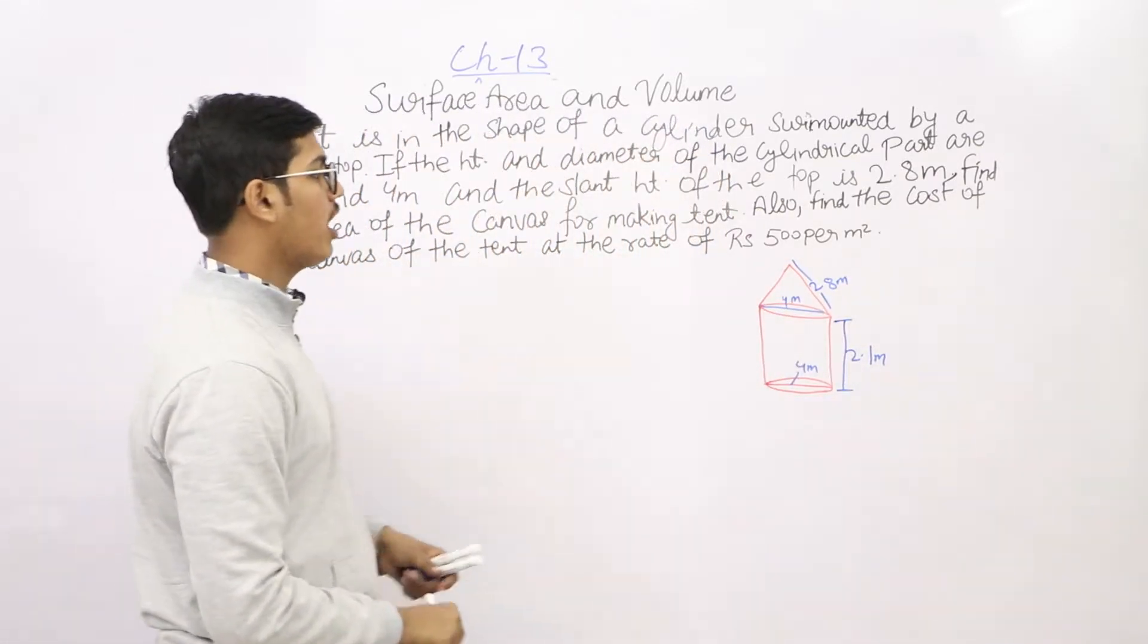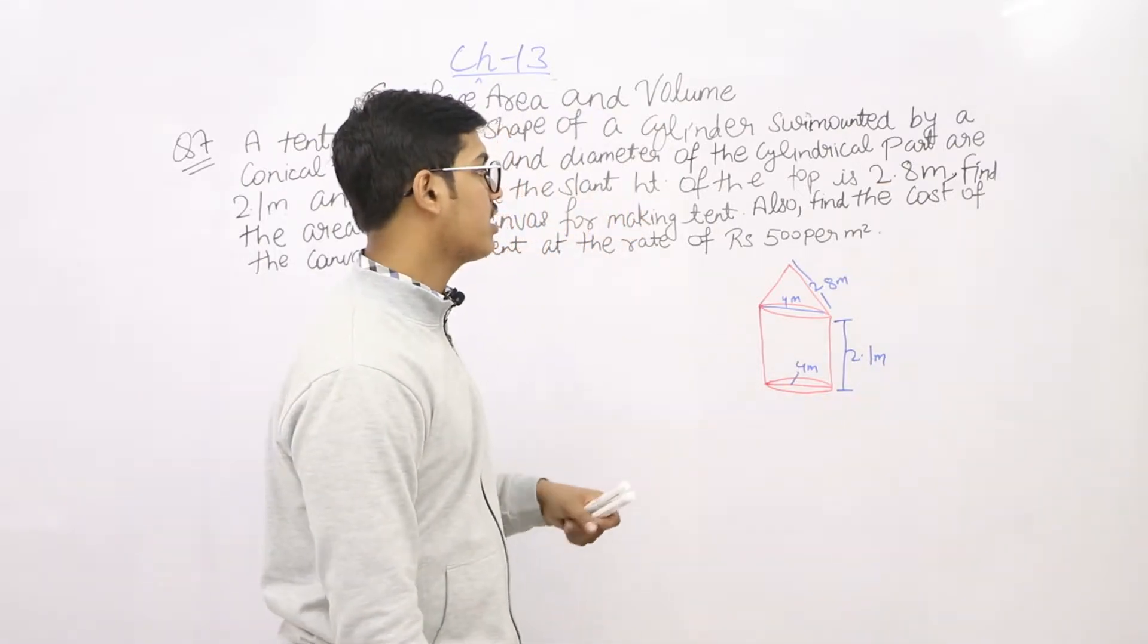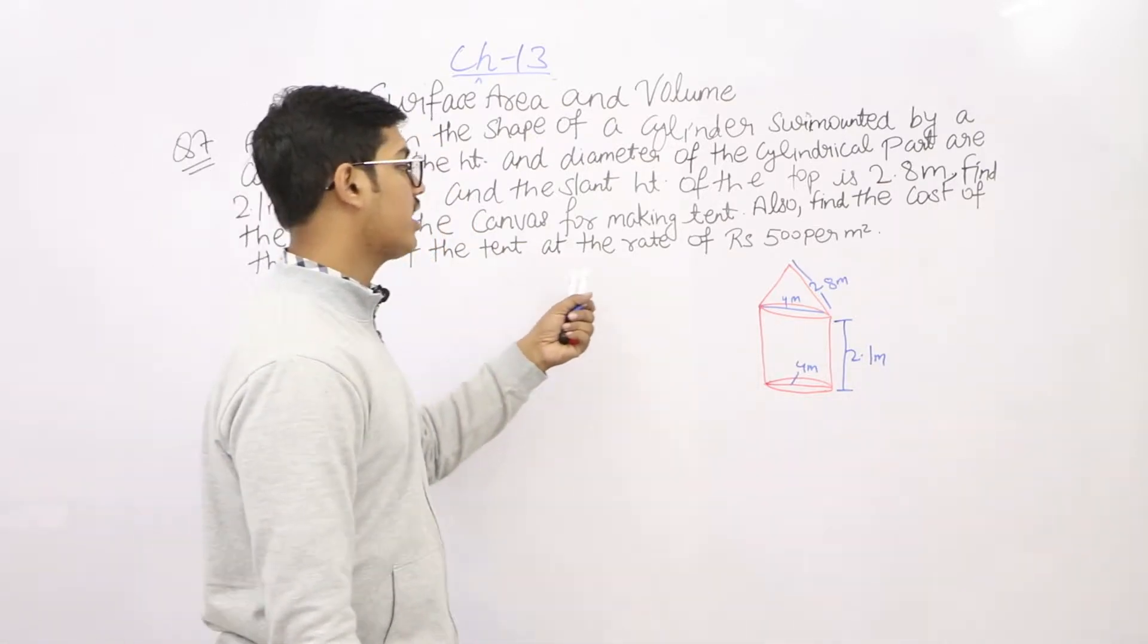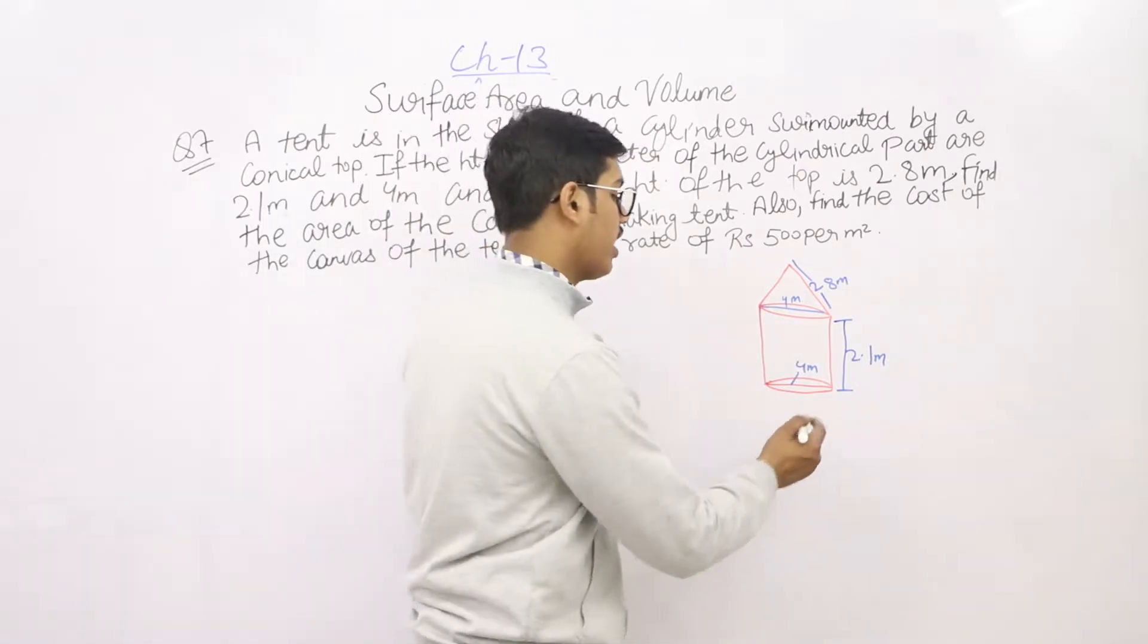Let's solve this. They have asked us to find the surface area of the tent, and the next part is we have to find out the cost of the canvas of the tent at the rate of 500 rupees per meter square.